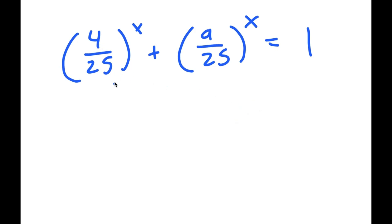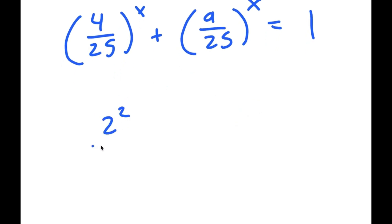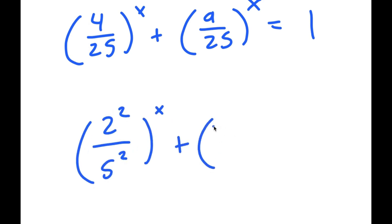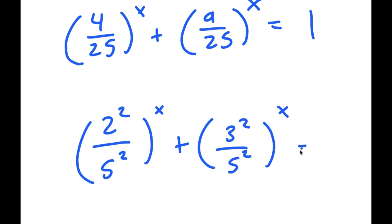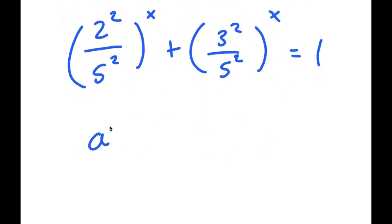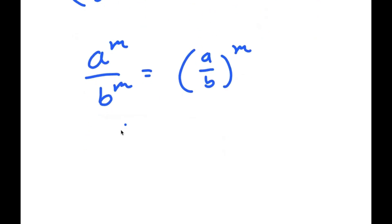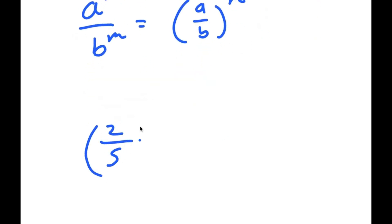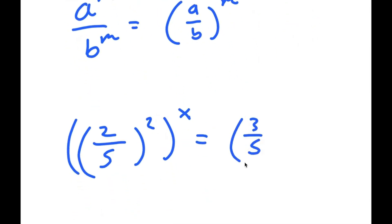From here I can rewrite 4 over 25 as 2 squared over 5 squared, and I can rewrite 9 over 25 as 3 squared over 5 squared. Now using the same rule, a squared over b squared equals a over b squared, so 2 squared over 5 squared turns into 2 over 5 squared, and 3 squared over 5 squared turns into 3 over 5 squared.